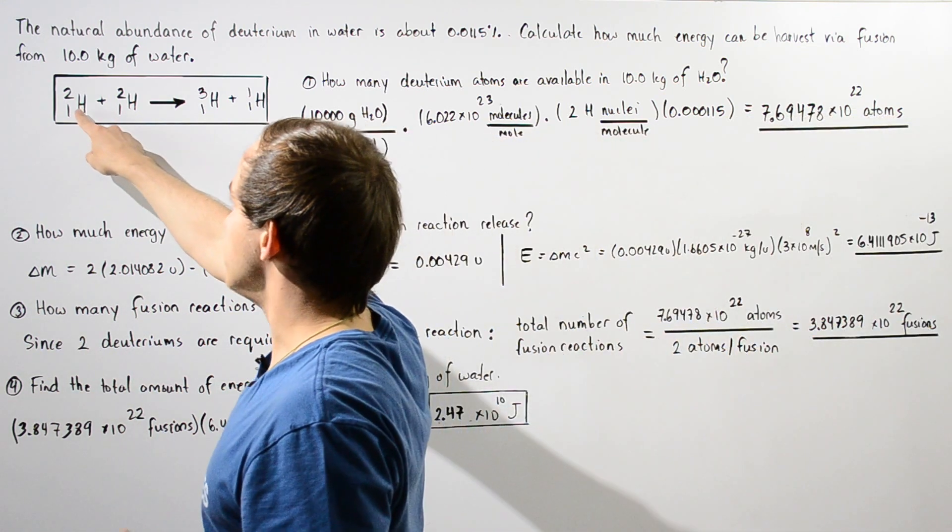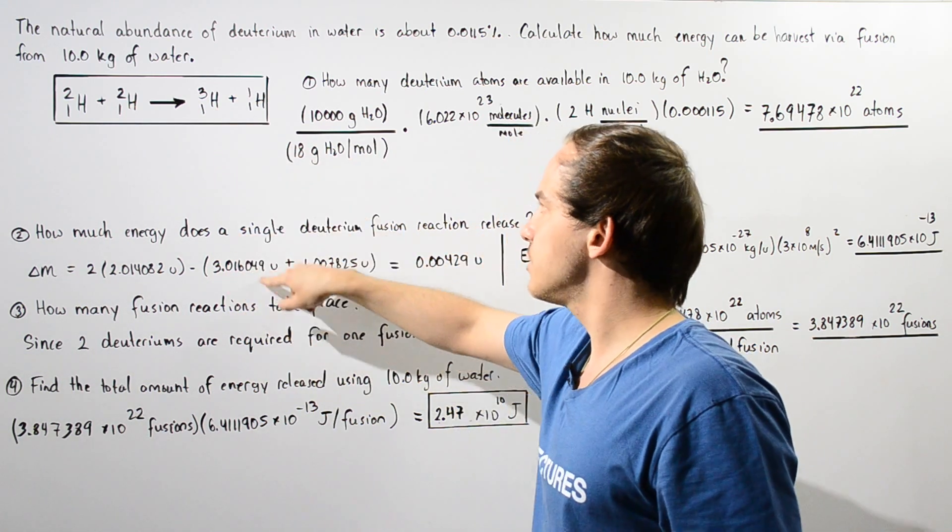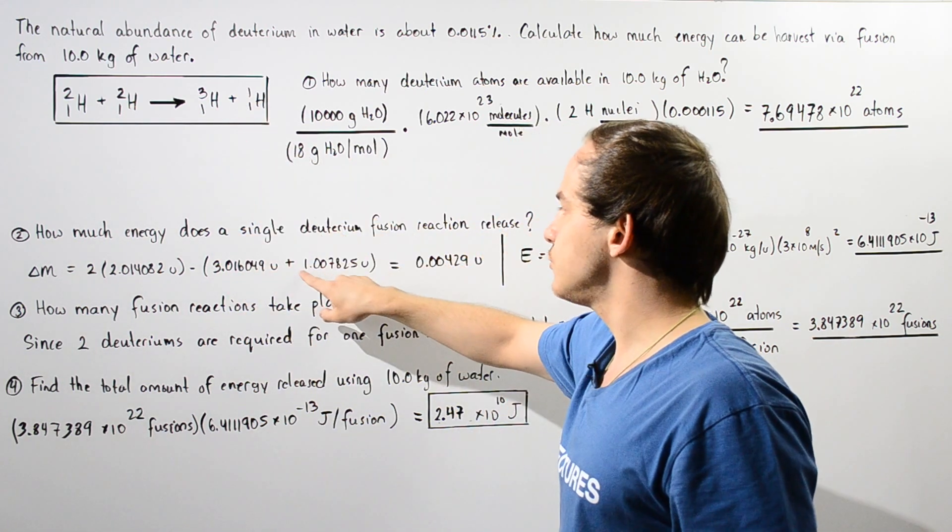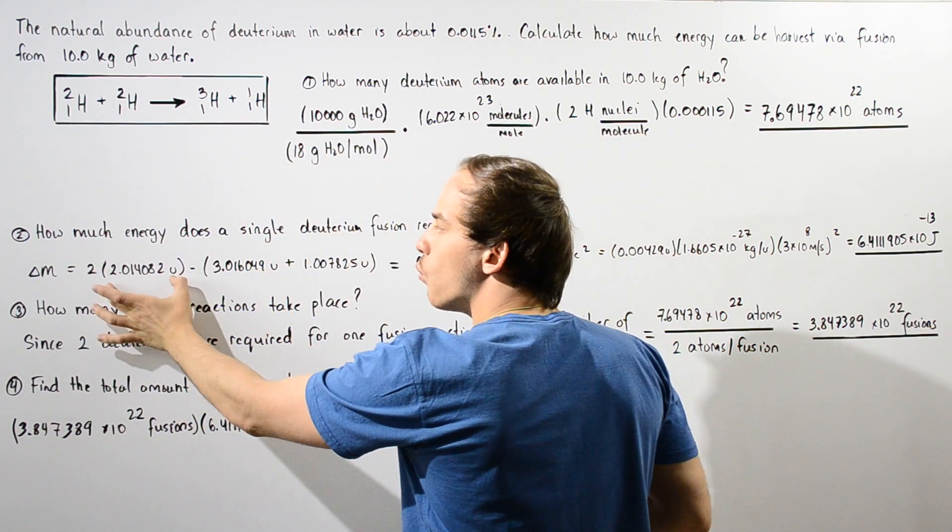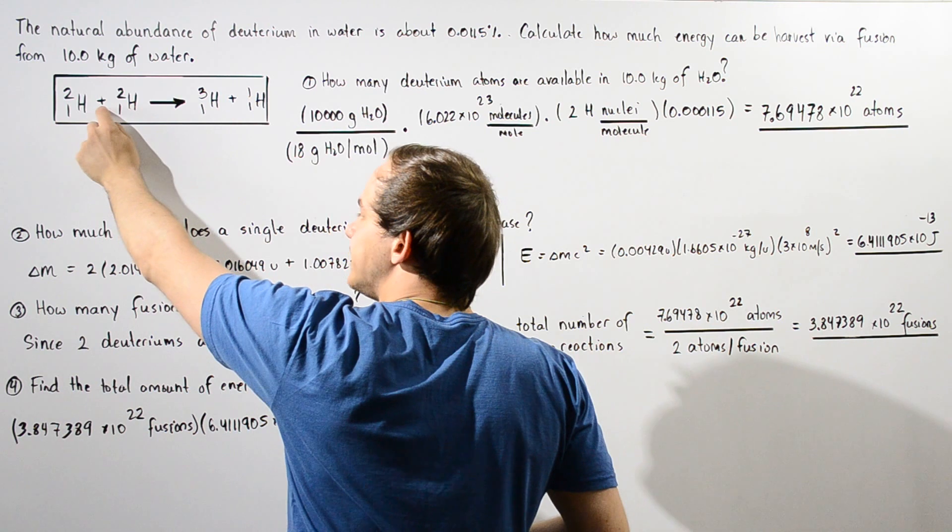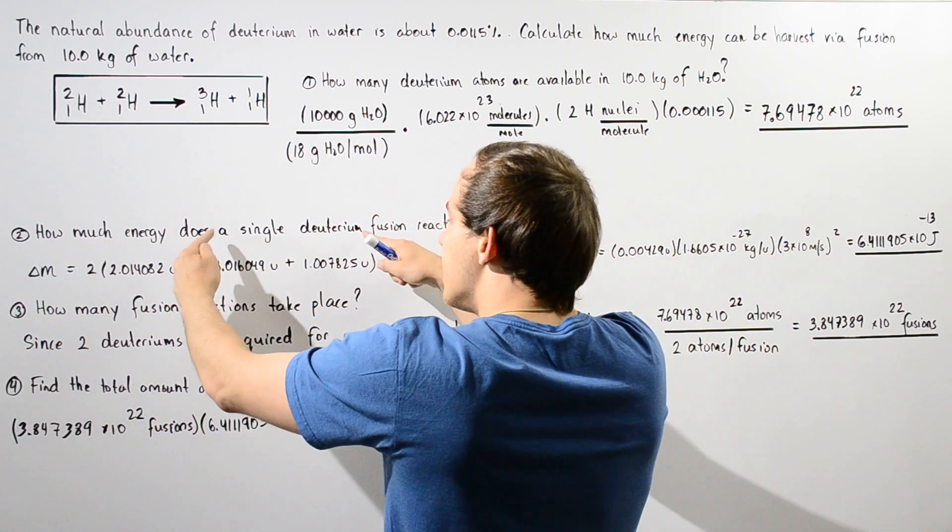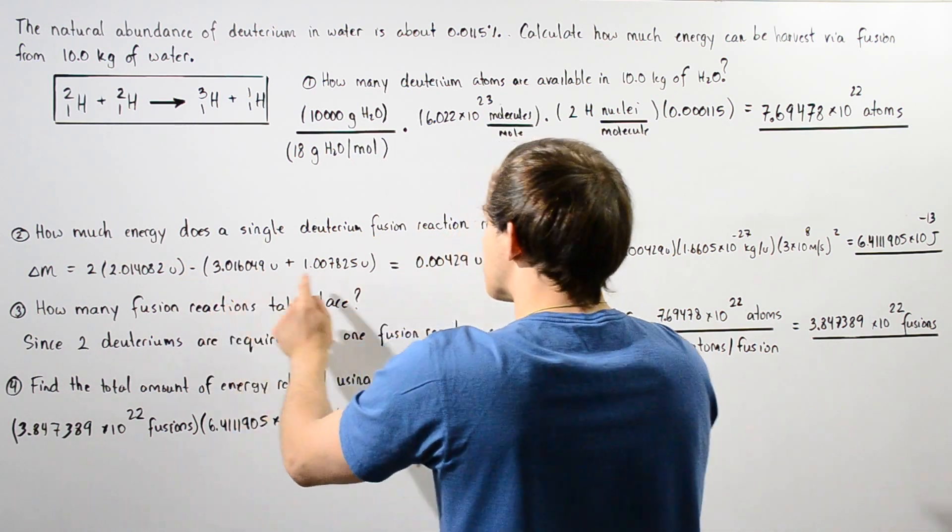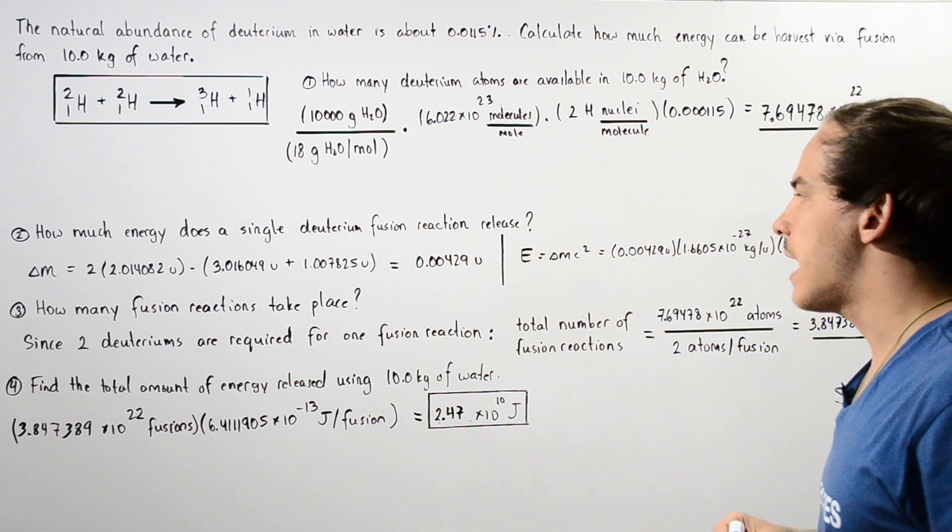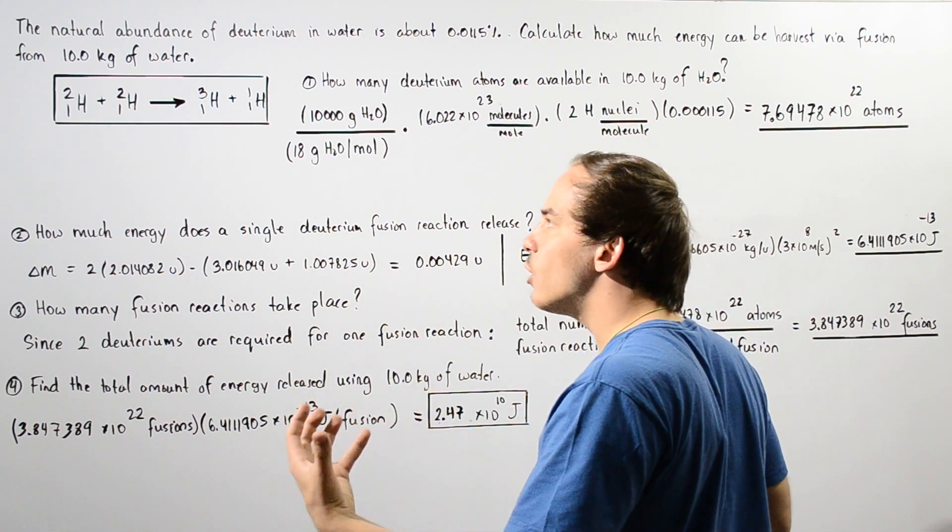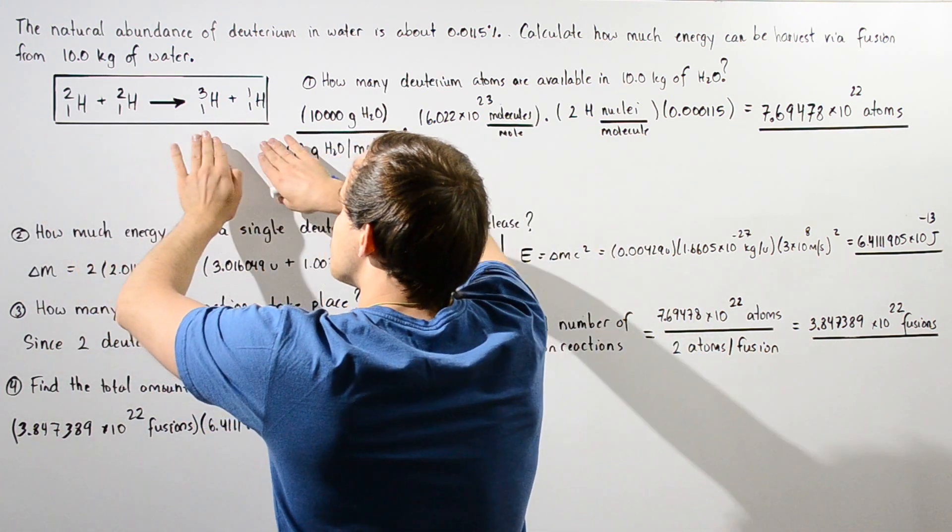So the mass of a single deuterium is given by this. The mass of our tritium is given by this. The mass of our hydrogen is given by this. So we multiply the mass of one individual deuterium by two. This gives the total mass of the reactants. And we subtract the total mass of the products. And we get about 0.00429 unified atomic mass units. This is by how much the mass decreases when we go from the reactants to the products.